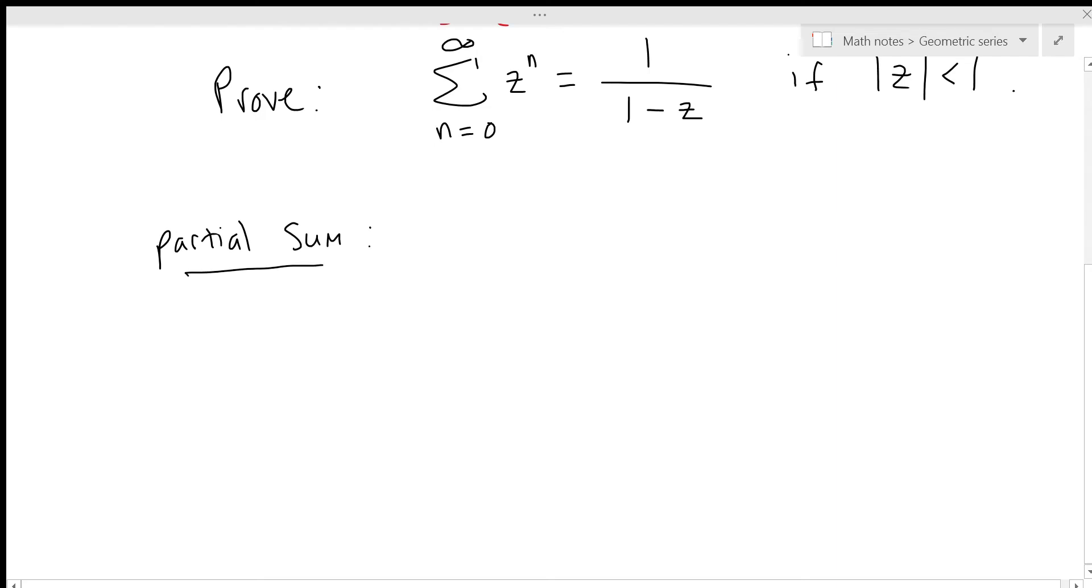So we define this sum. We fix some number capital N, and we just take the terms in the series up to capital N. And it'll be useful for us to write this out in detail. So we have 1 plus z plus z squared plus dot dot dot all the way up to z to the capital N power.